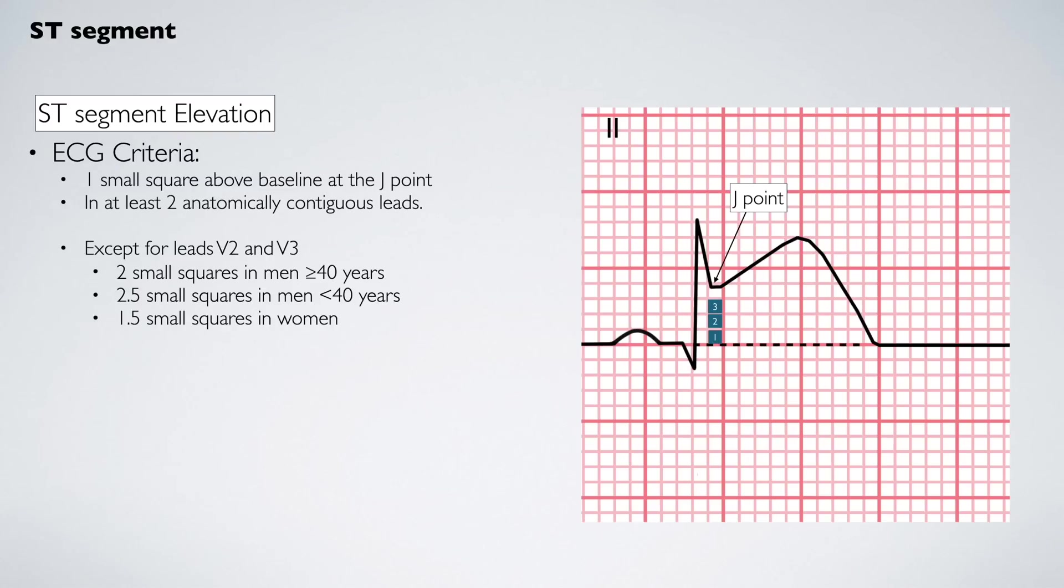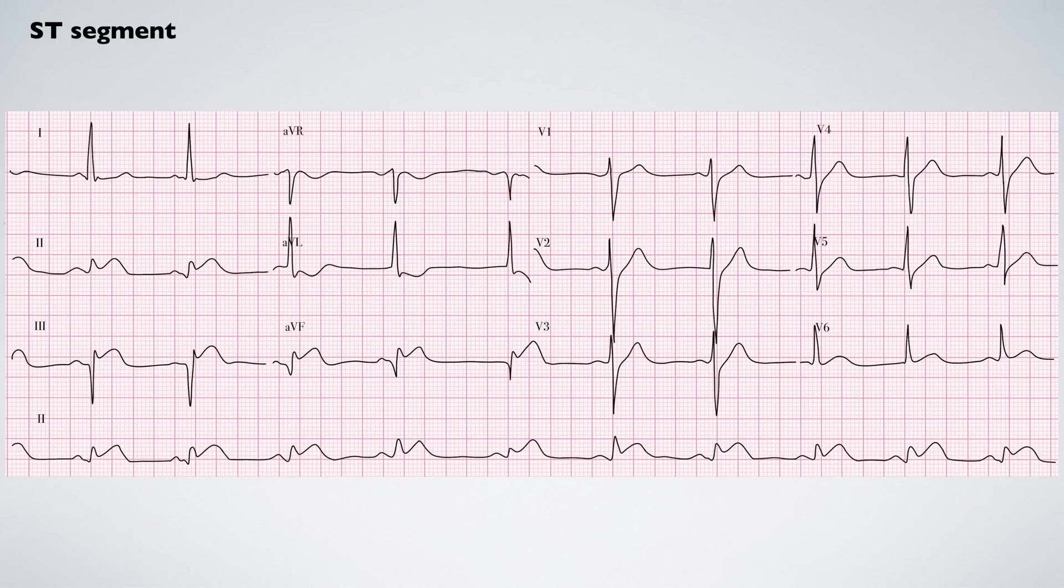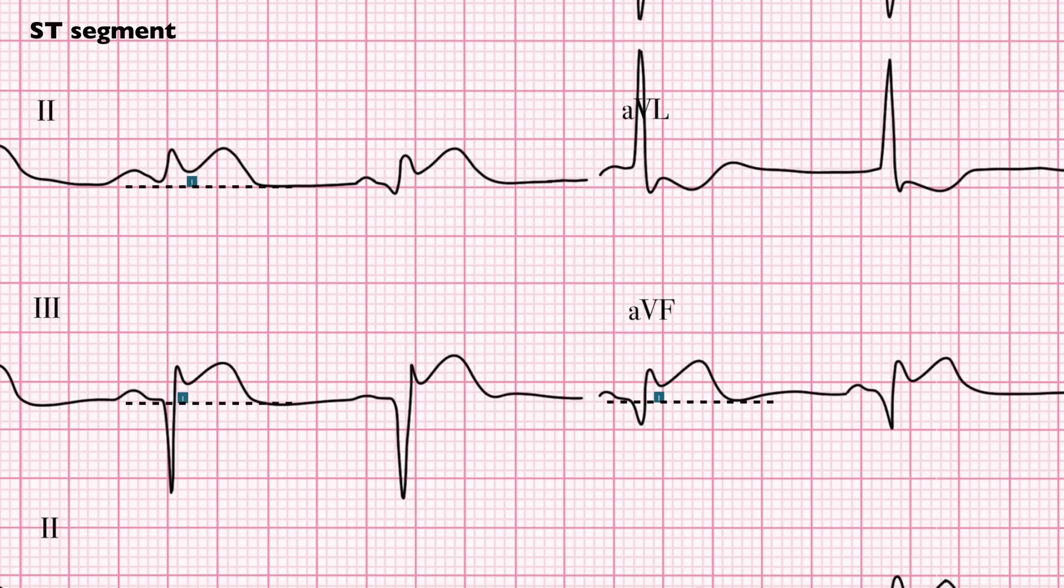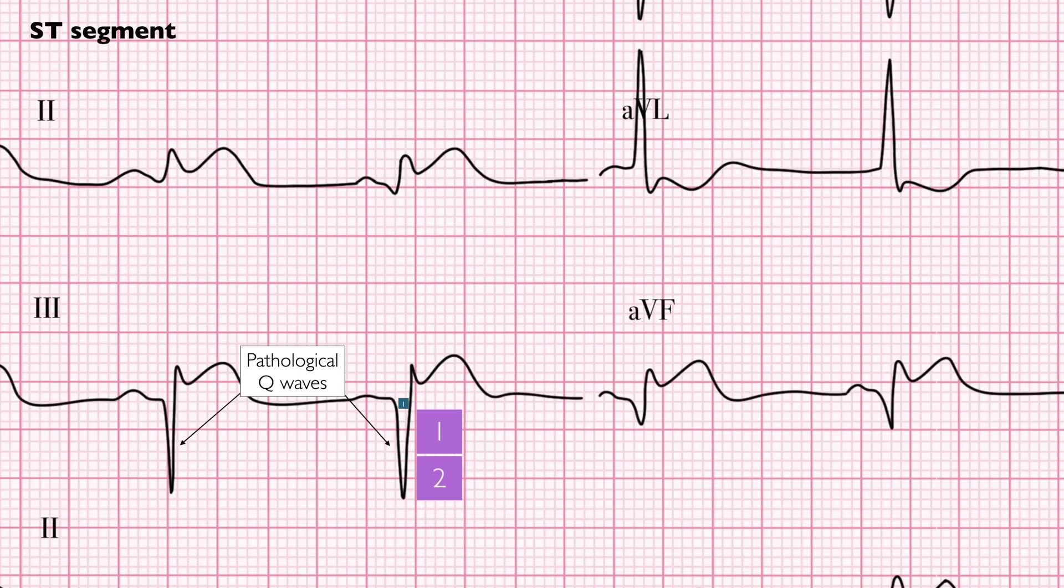Let's take a look at some examples. In this next example, ST elevation is present in the inferior leads. Note that pathological Q-waves are also present suggesting significant myocardial injury. Pathological Q-waves are confirmed by having a duration of greater than one small square or having a depth equal to or greater than one large square.